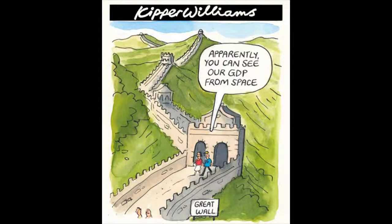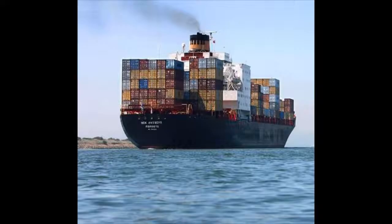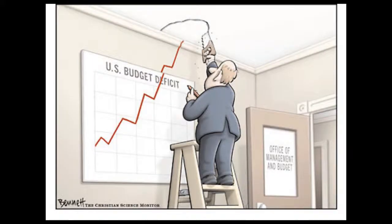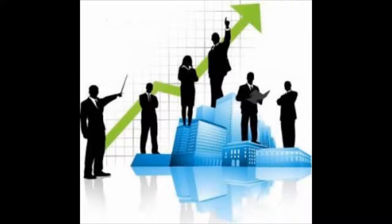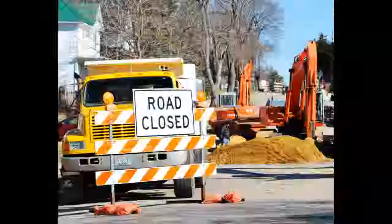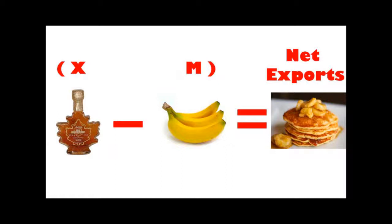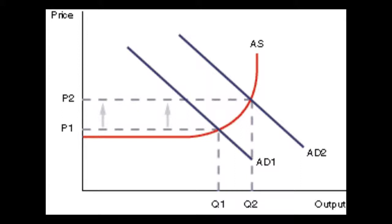This brings us to aggregate demand, the most fundamental concept of macroeconomics. Aggregate demand is a country's total output — basically everything we produce and every service we provide. Aggregate demand is also known as gross domestic product, or GDP. GDP is made up from everything we buy, everything we invest, everything the government spends on, and our net exports. Our aggregate demand graph is very similar to any demand graph seen in microeconomics.